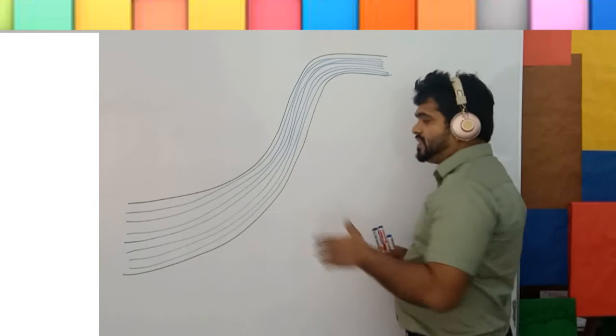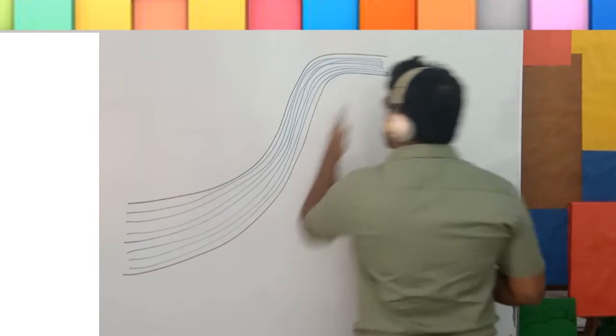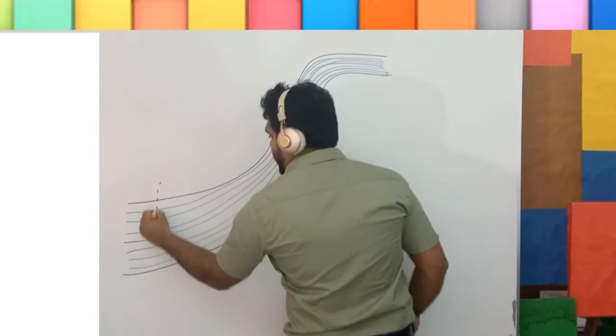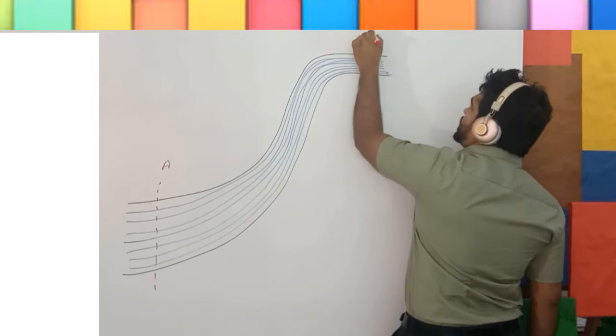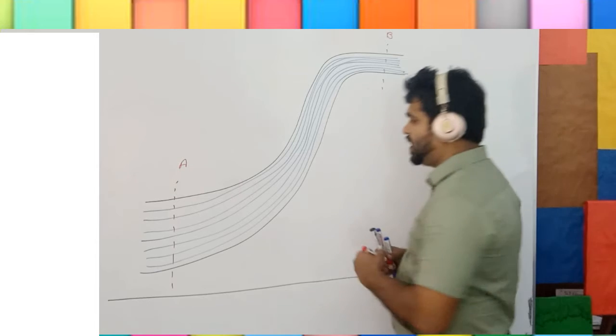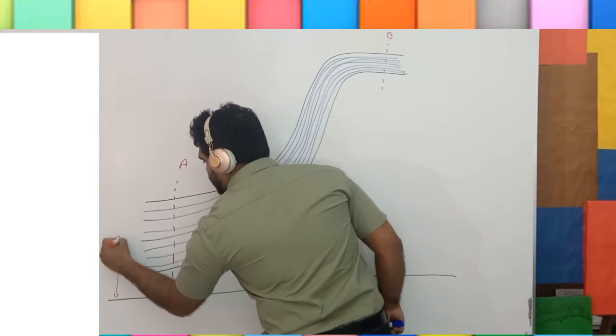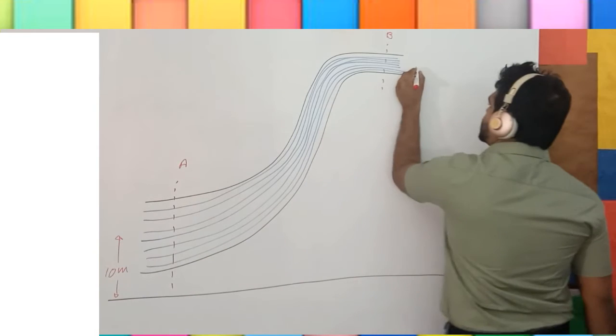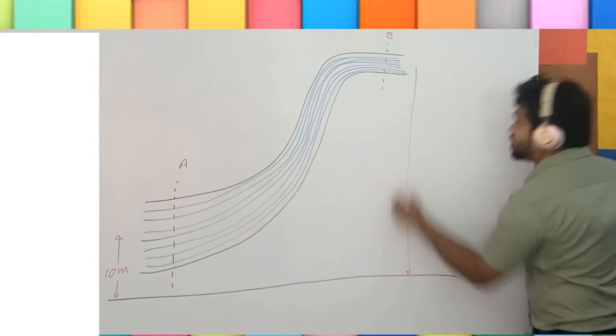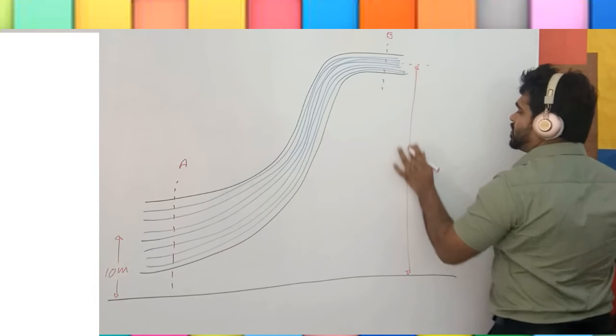This is a tube which carries water from A to B. This will be cross section A, cross section B. Height, 10 meters. Here, 15 meters.